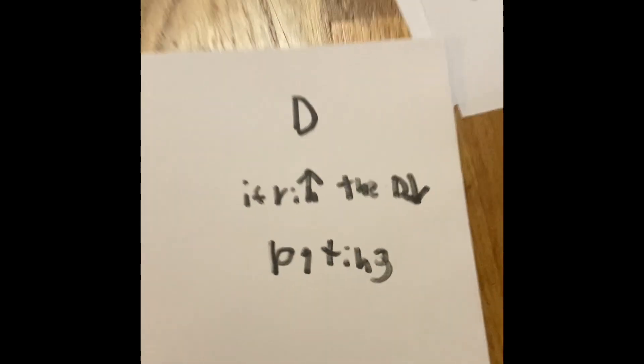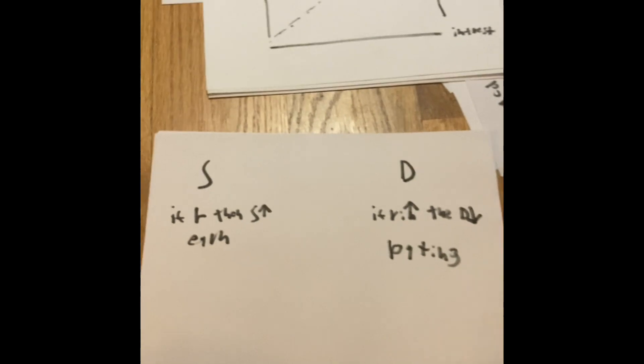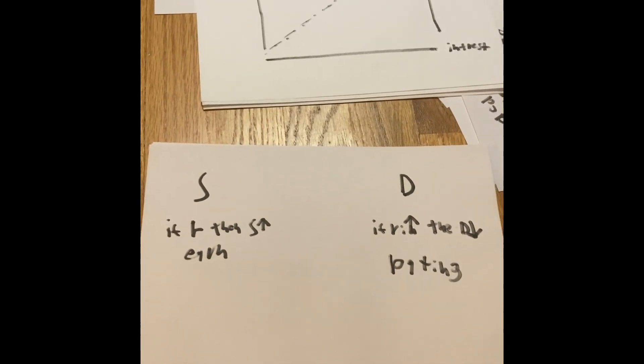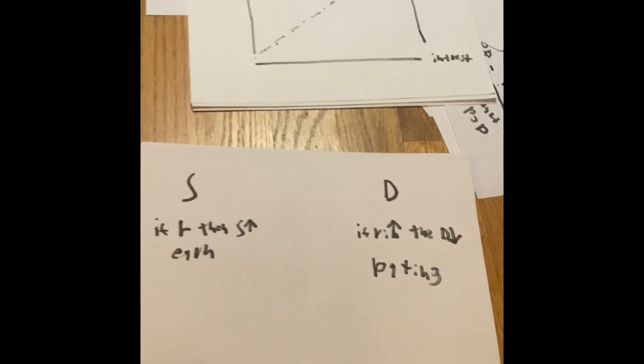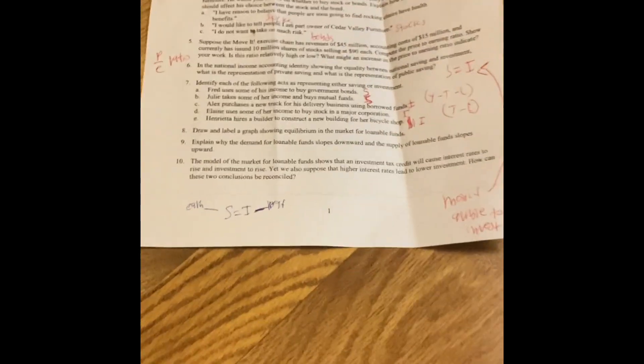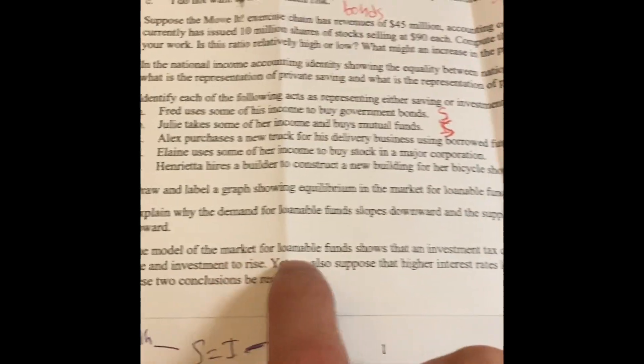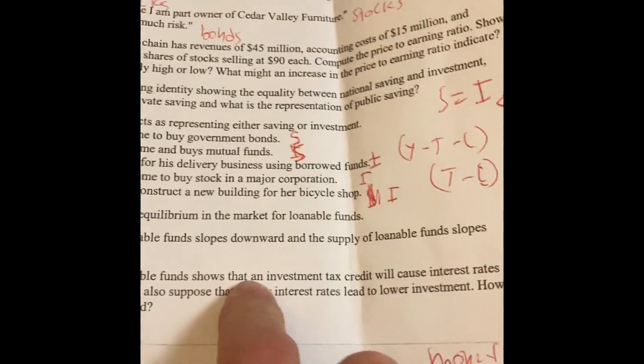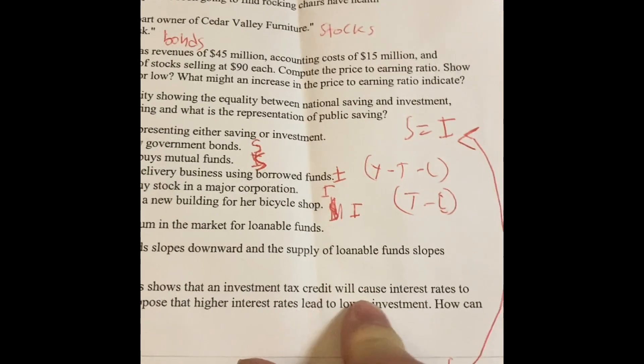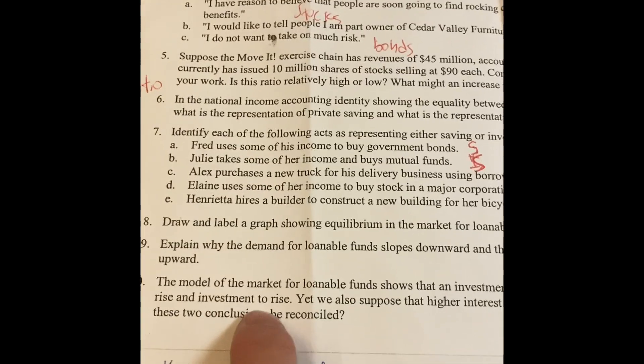When we encounter the problems, we'll be referring back to this. Let's get to the first problem, and it's actually on a worksheet we looked at. The model of the market for loanable funds shows that an investment tax credit will cause the interest rates to rise and investment to rise.